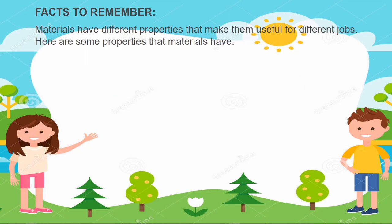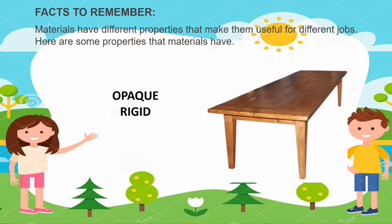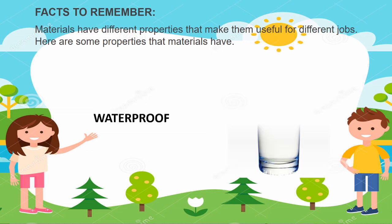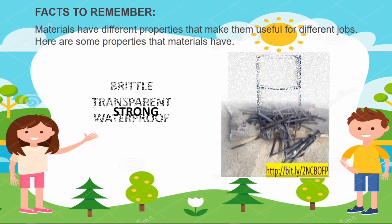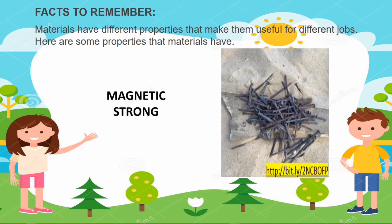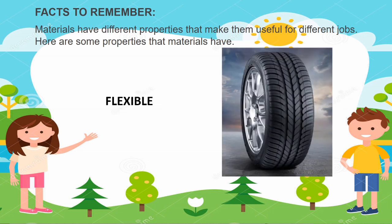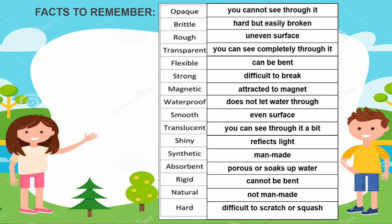Materials have different properties that make them useful for different jobs. Here are some properties that materials have. For example, a table is known to be opaque and rigid. Glass is brittle, transparent, and waterproof. Nails are magnetic and strong, while tires are known to be flexible.